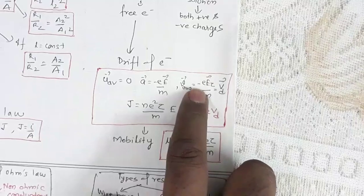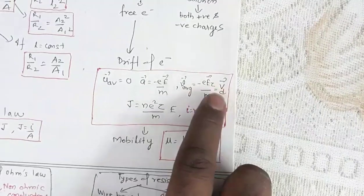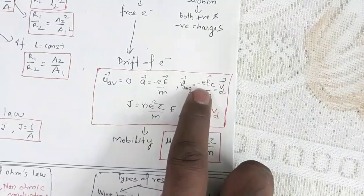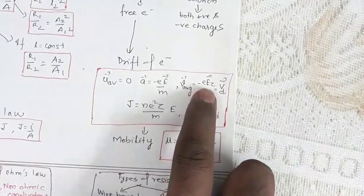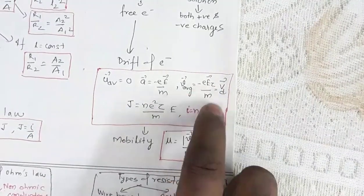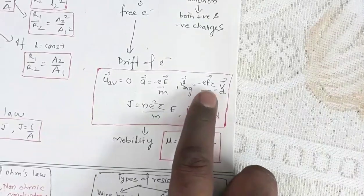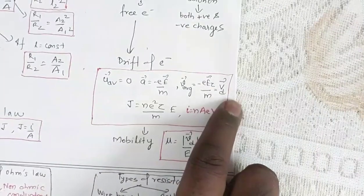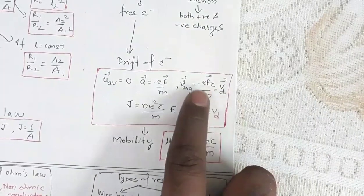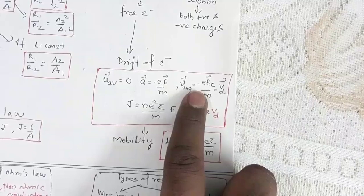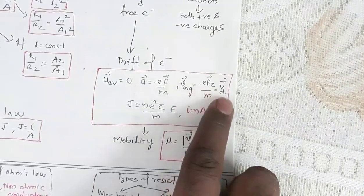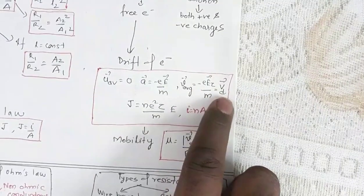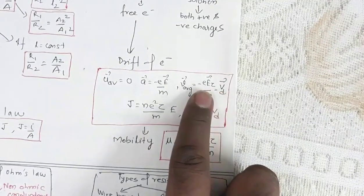There is a minus sign in the drift velocity expression. All other quantities except electric field are scalar, so electric field is a vector and drift velocity is a vector. The minus sign shows that electrons have a drift velocity opposite to the direction of the electric field.